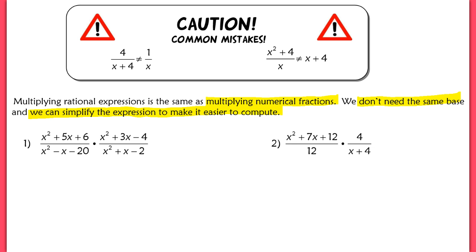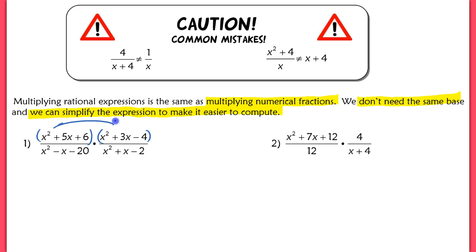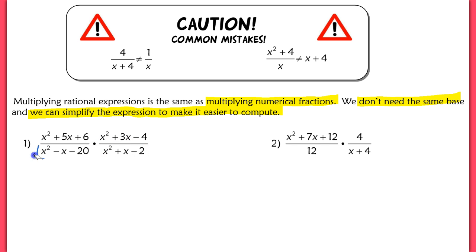Starting with example number 1, this is a rational expression — a polynomial over another polynomial, a ratio. It would be really tough to multiply across directly because distributing all these terms creates a lot of work in both numerator and denominator. Instead, what we're going to do is factor and cancel factors, just like we did with numbers.